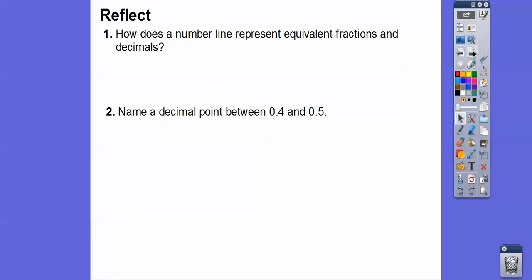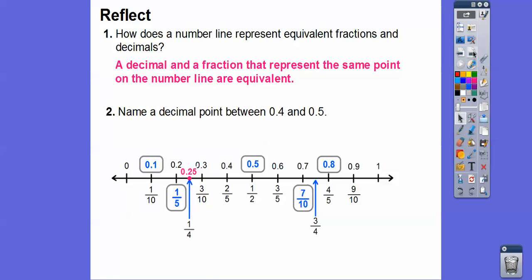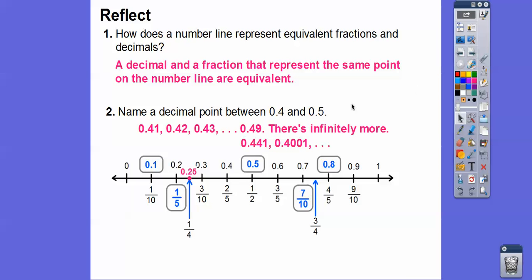How does the number line represent equivalent fractions and decimals? A decimal and a fraction that represent the same point on the number line are equivalent. So 0.1 is the same as 1 tenth, 0.2 is the same as 2 tenths or 1 fifth, and 0.25 is 1 fourth. Name a decimal between 0.4 and 0.5 — the most obvious is 0.45, but there are actually infinitely many decimals in between, such as 0.41, 0.42, 0.43, 0.49, or even 0.441, 0.4001, and so on.